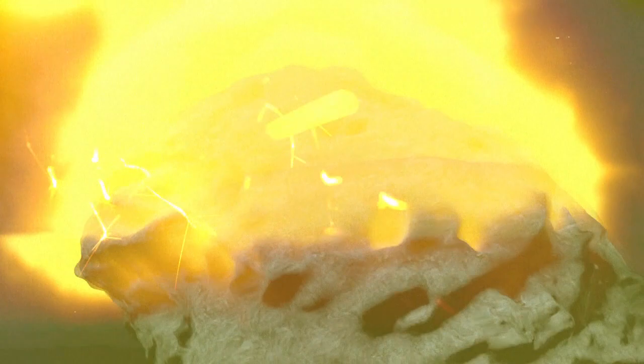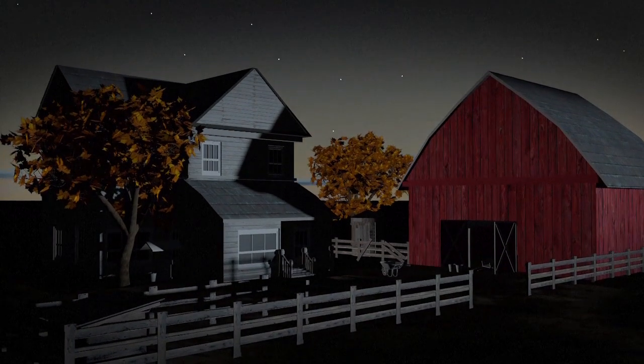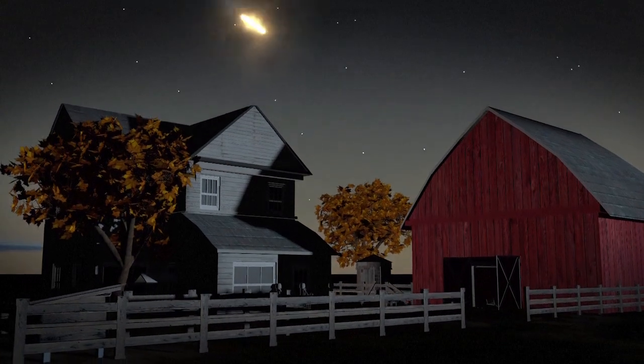When a meteorite enters the atmosphere at a very high speed, 20 kilometers a second, it ignites, leaving a luminous trail across the sky.